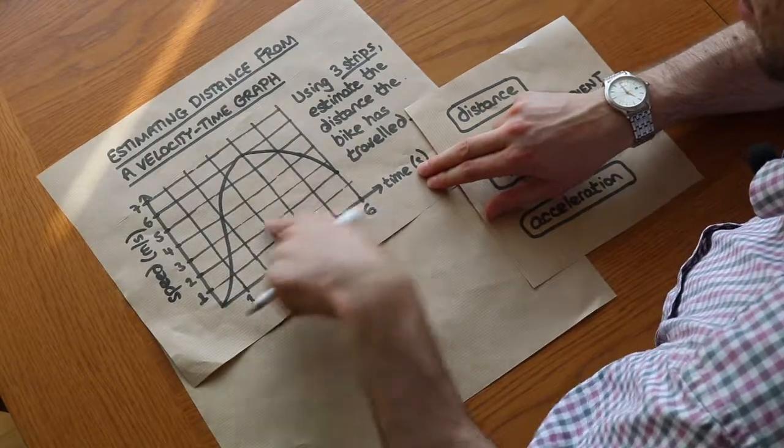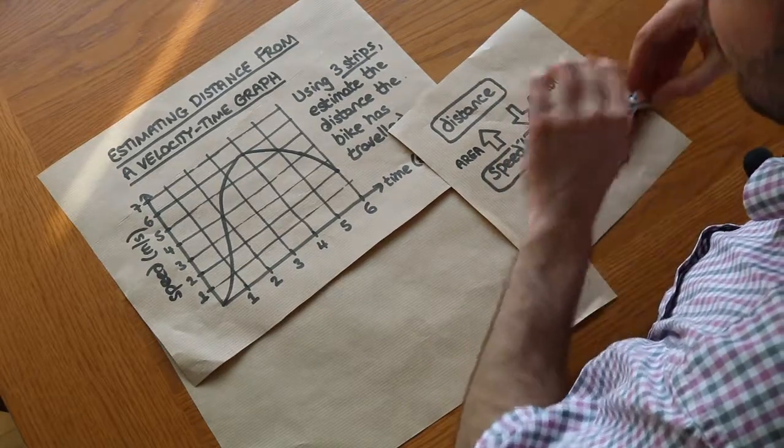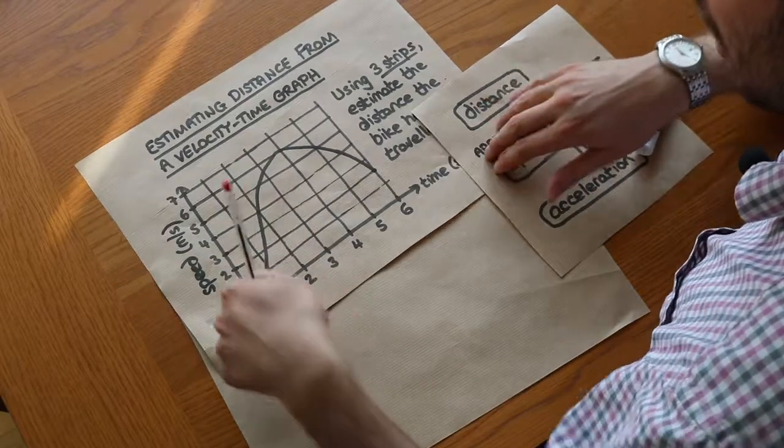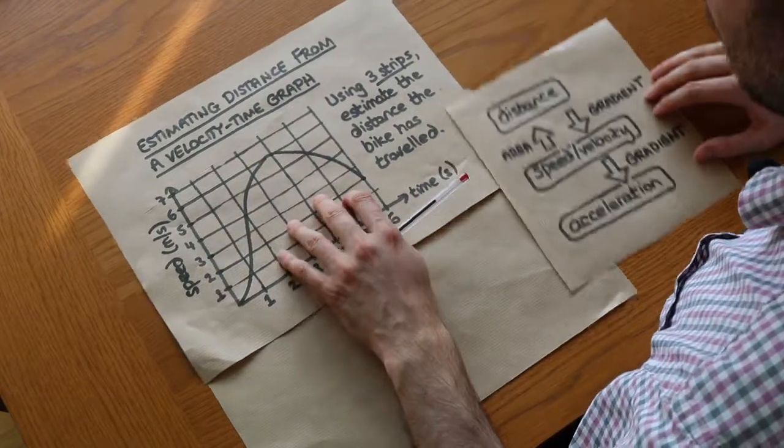Now because it's a curved graph, it makes it slightly harder to find the area. So what we need to do is we actually have to divide it up into trapeziums and triangles. So we'll see how to do that.